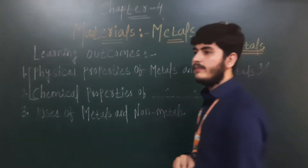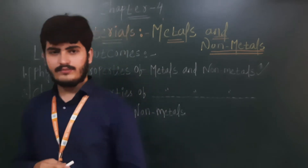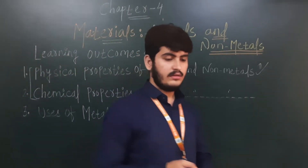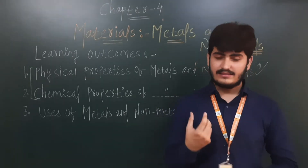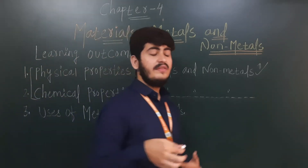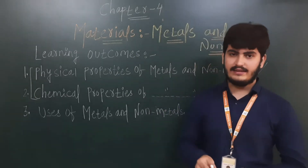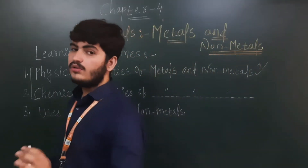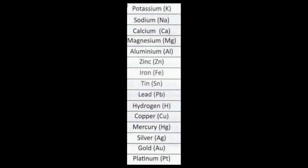Today in this video we start with the first topic: physical properties of metals and non-metals. Physical properties include lustre — which means shining — and hardness. Now let's see the chemical symbols of some materials: potassium is K, sodium is Na, calcium is Ca, magnesium is Mg, aluminium is Al, zinc is Zn.